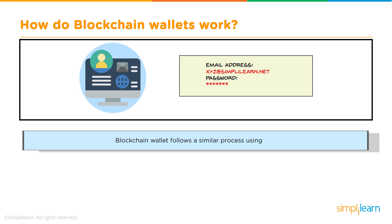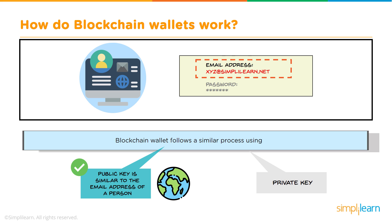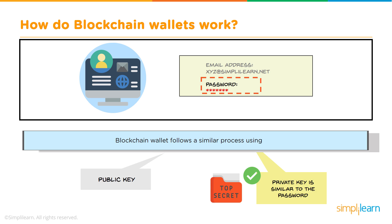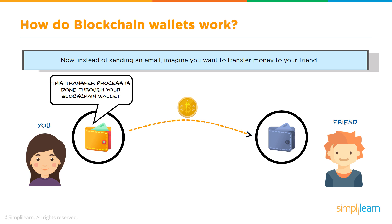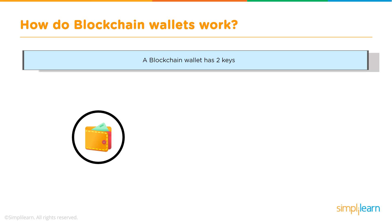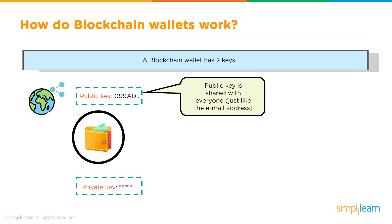Blockchain wallets follow a similar process using a public key and a private key. The public key is similar to your email address — whenever your wallet is generated, a public key is generated and you can share it with anyone in order to receive funds. The private key is top secret, similar to your password; it should not be hacked or disclosed to anyone, and you use this private key to spend your funds. A blockchain wallet has two keys: a public key and a private key.